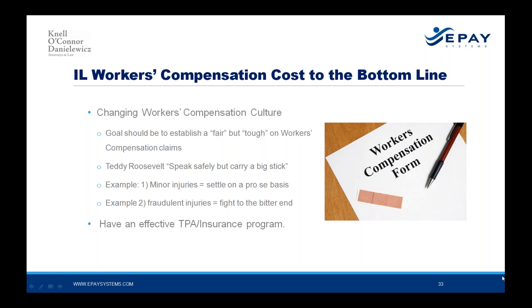However, on fraudulent injuries — where it's clear that fraud is present, either in the injury itself, in malingering, or in treatment, especially in cases alleging permanent total disability — you need to fight to the bitter end to send the message. Another essential element of effective workers' compensation reduction is to have an effective TPA insurance program — a TPA or insurance company that knows your business and is your partner in trying to reduce costs and exposure.